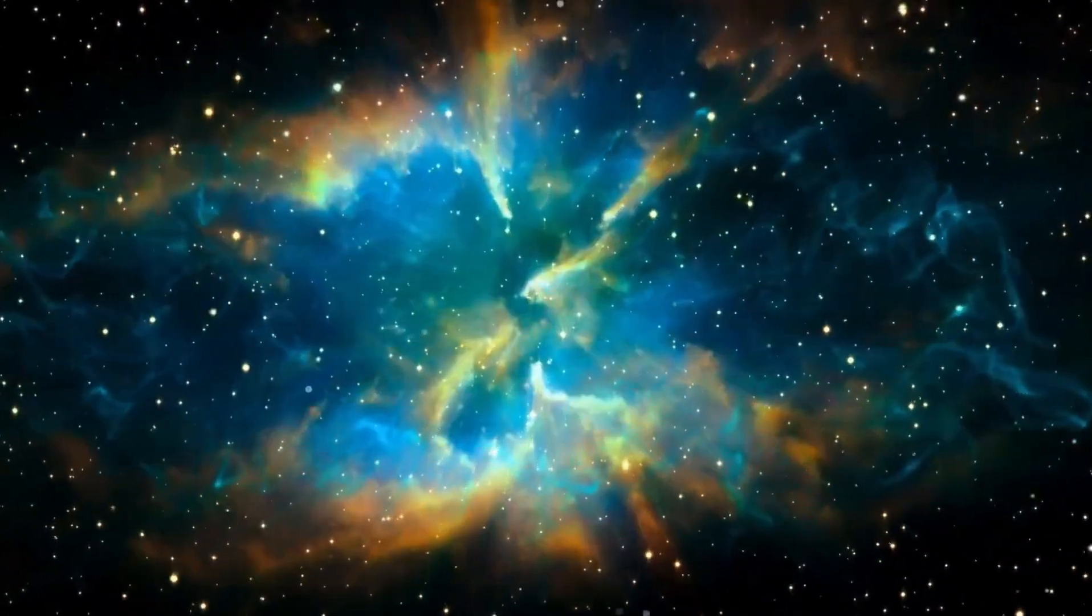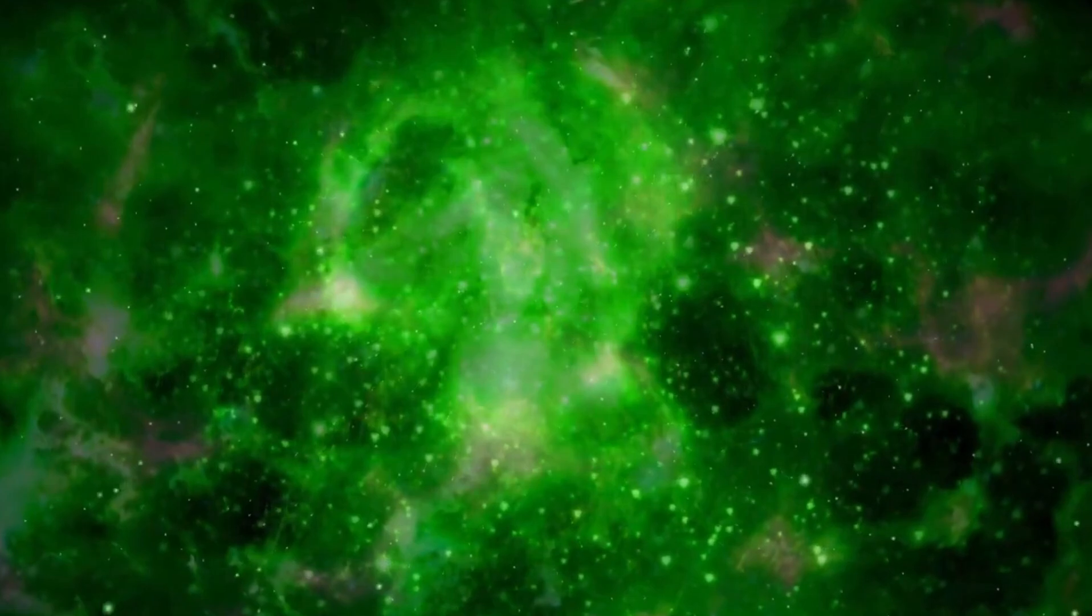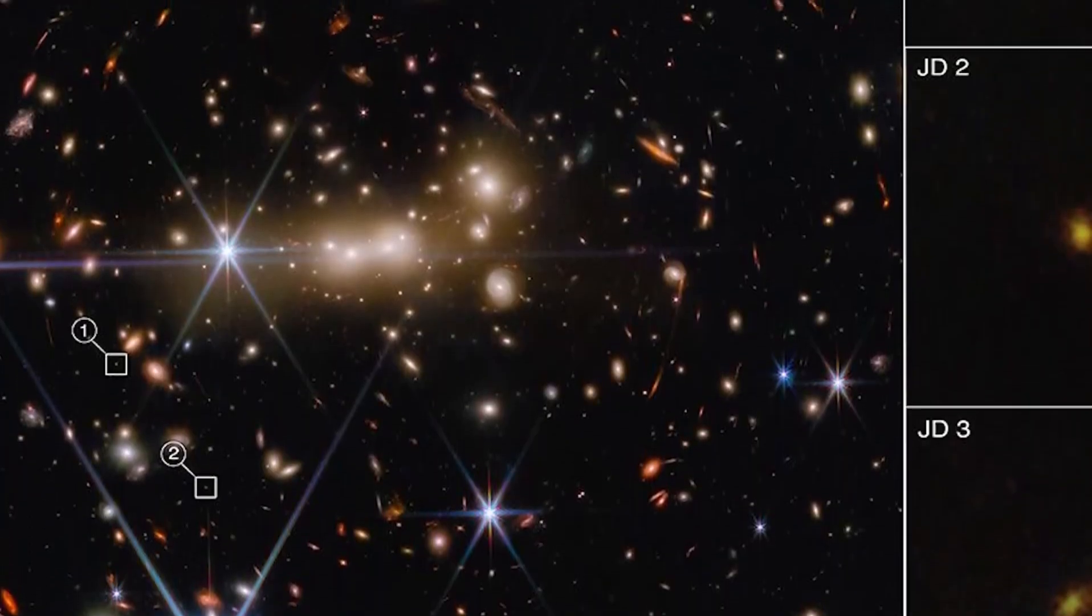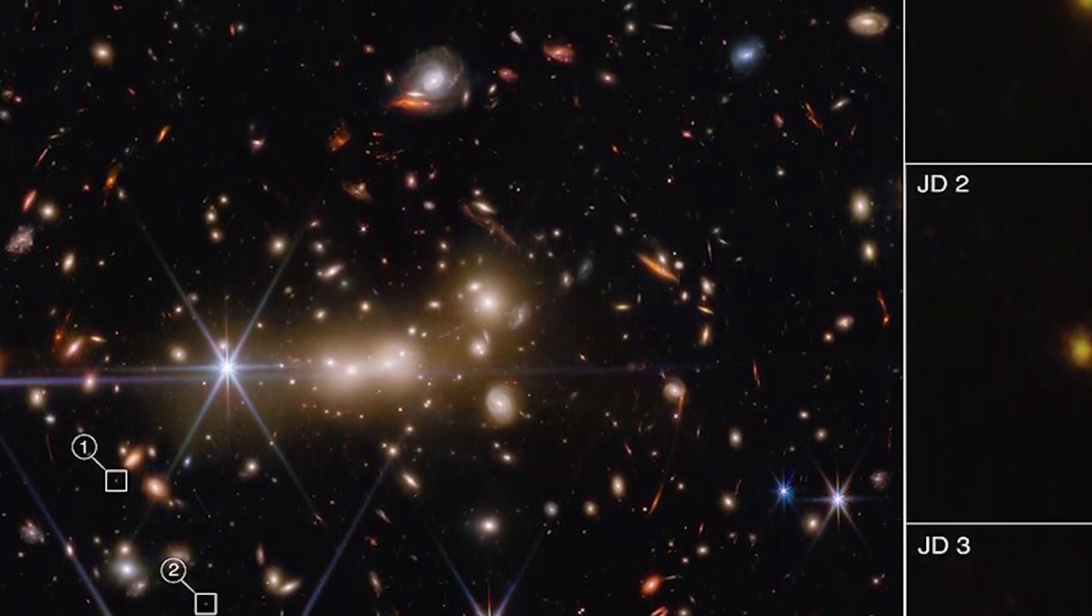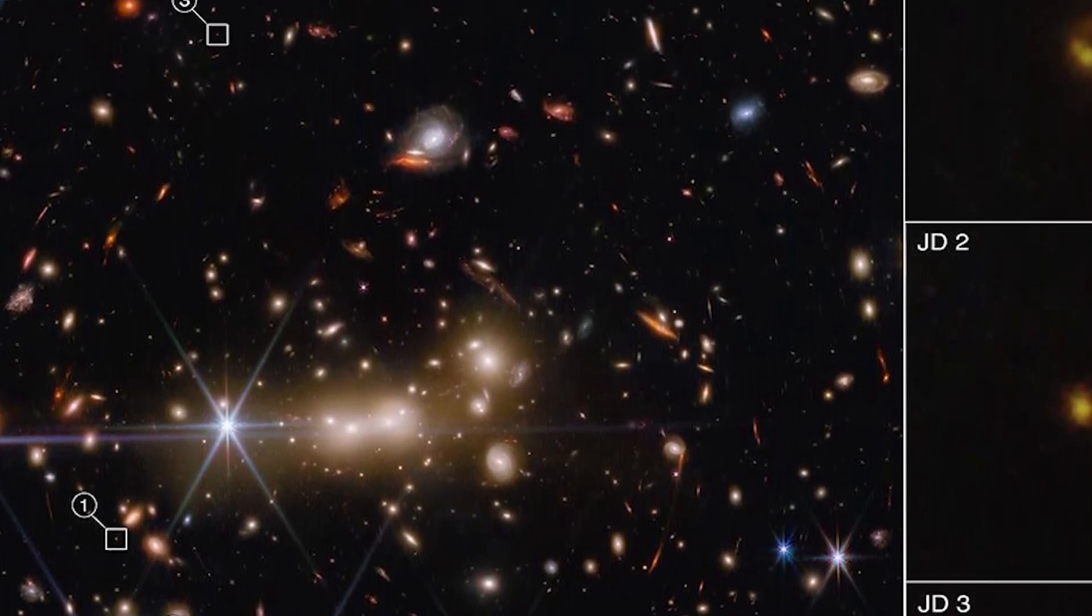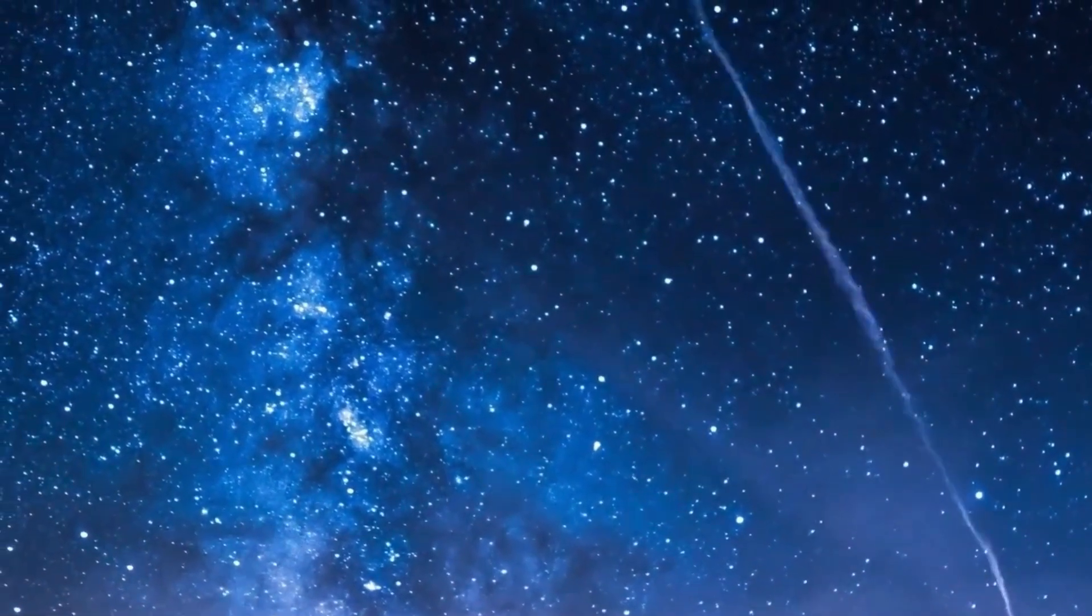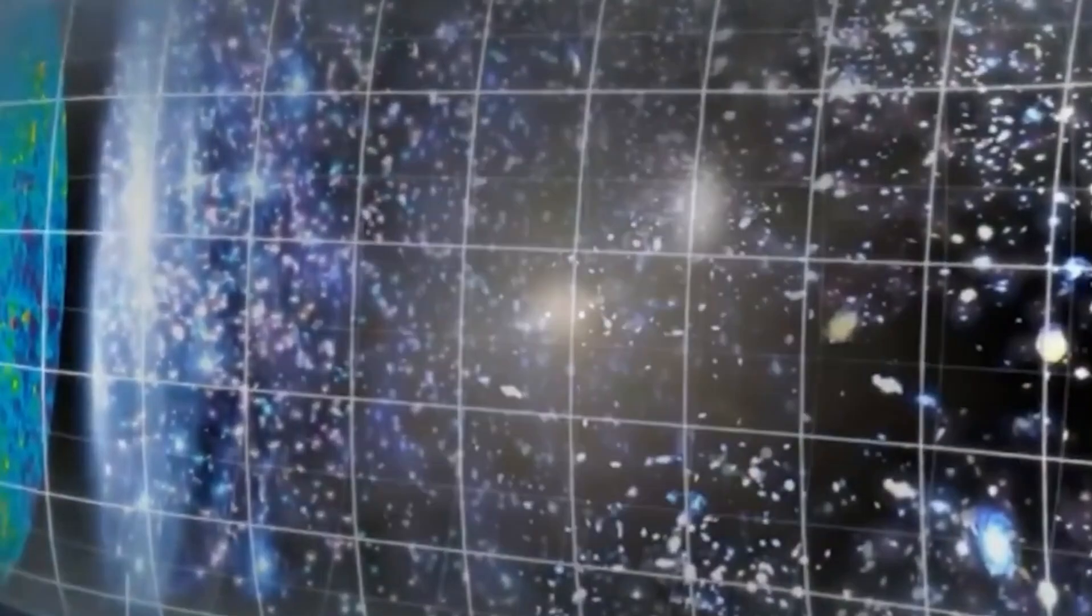The images that reveal these perplexing galaxies were obtained by Webb's near-infrared camera as part of the Cosmic Evolution early release science program. The team plans to return soon to these galaxies and the nearby mirror to obtain spectra of light from distant points. The spectra decompose the observed light according to its composition into wavelengths, thus revealing the chemical and physical properties of its source.